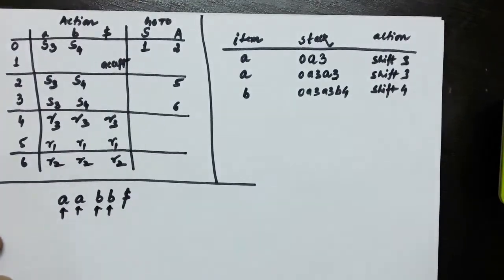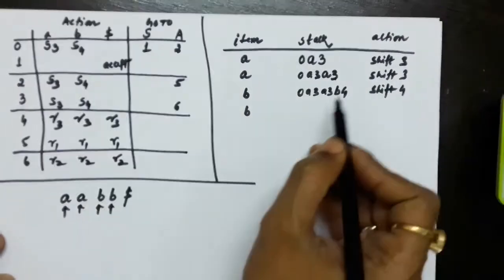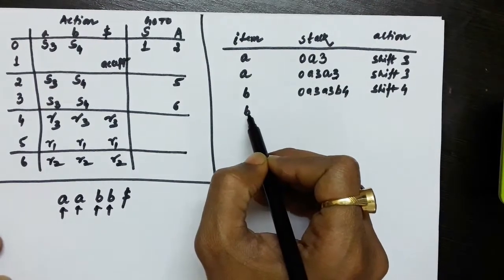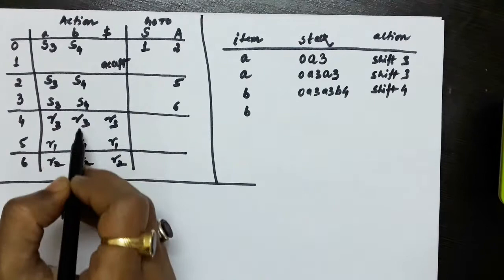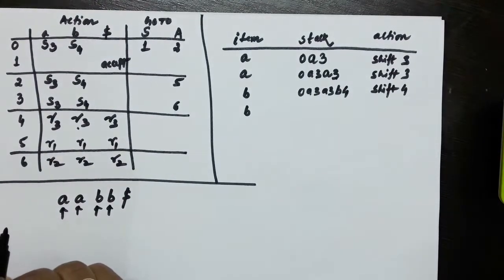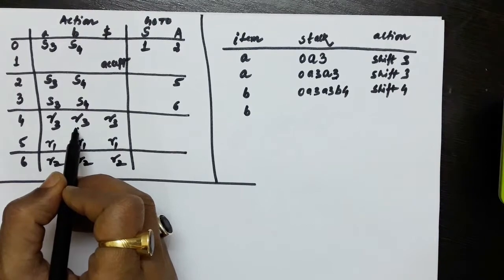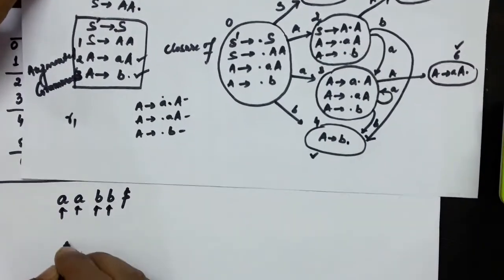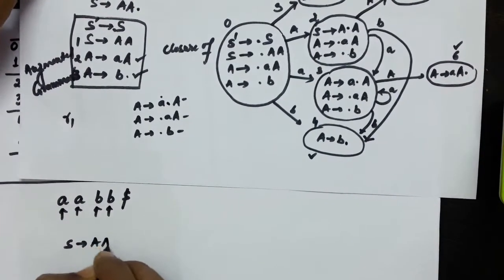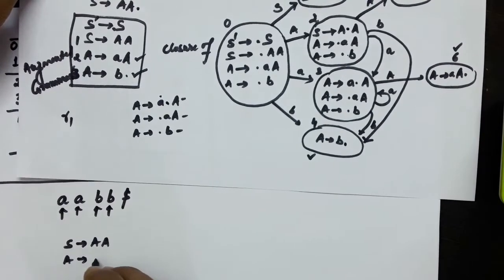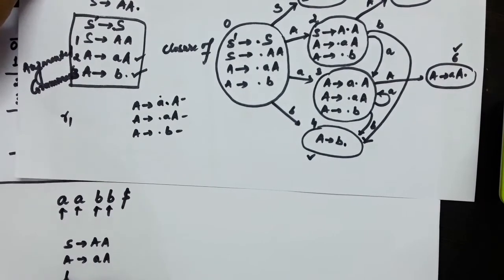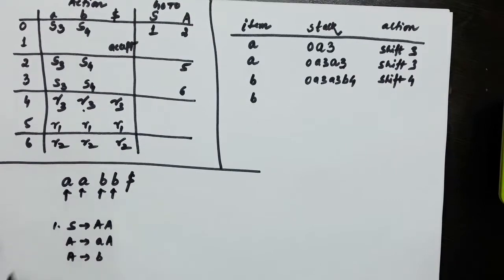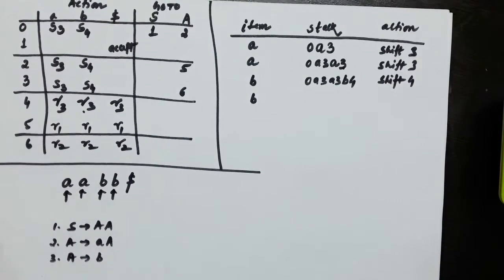The next symbol is small b again. State 4 on b is suggesting us to reduce — reduce by production number 3. The production rules are: production 1: S produces capital A capital A; production 2: A produces small a capital A; production 3: A produces small b. So state 4 on b gives R3, meaning reduce by production 3.